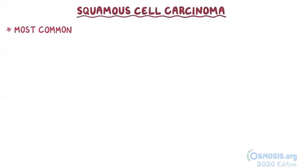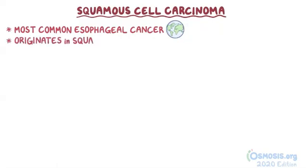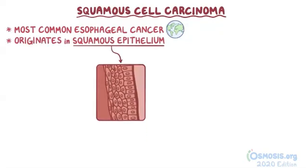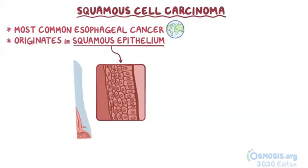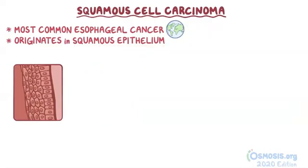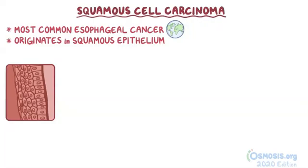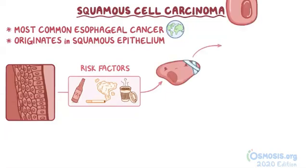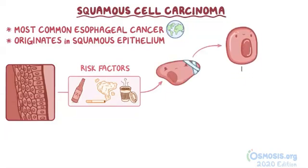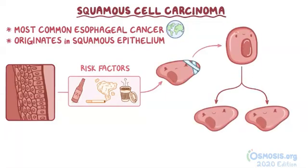Squamous cell carcinoma is the most common type of esophageal cancer worldwide, and it originates in the squamous epithelium of the esophagus, most often in the upper two-thirds. When this epithelium is repeatedly exposed to risk factors like alcohol, cigarette smoke, or hot fluids, it gets damaged, so the squamous cells divide to replace the old damaged cells.